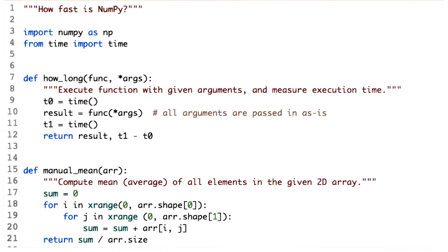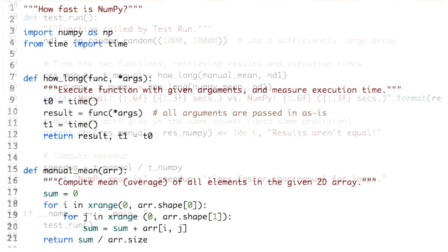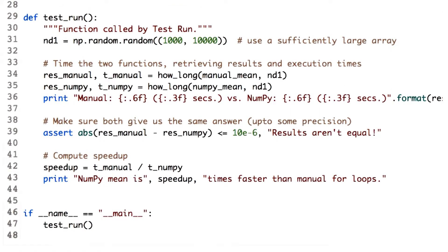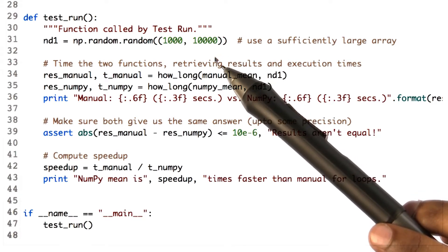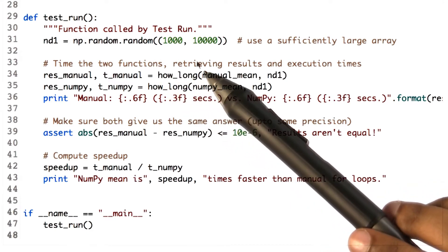Now when we know how to time an operation in Python, let's check how fast NumPy is. Let's define a really large array so that the time taken for the operation will be significant to compare. So here is a large array of thousand rows and 10,000 columns.